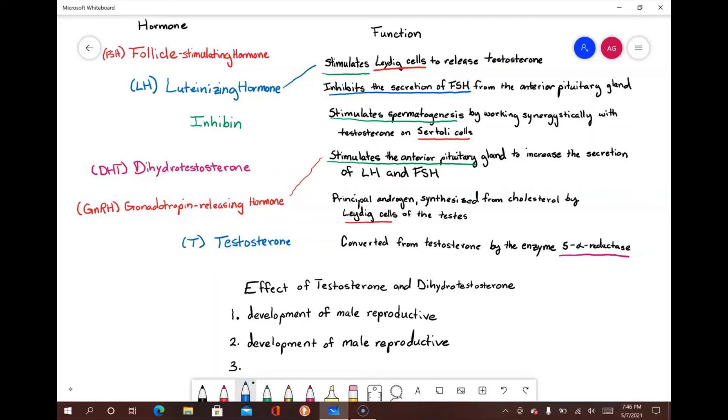Follicle-stimulating hormone is used to stimulate spermatogenesis by working synergistically with testosterone on Sertoli cells. Sertoli cells release inhibin once a homeostatic level of spermatogenesis has been met. Inhibin inhibits the secretion of follicle-stimulating hormone from the anterior pituitary gland. Testosterone and dihydrotestosterone are the two androgens of the male reproductive system and drive the majority of processes and behaviors in males.